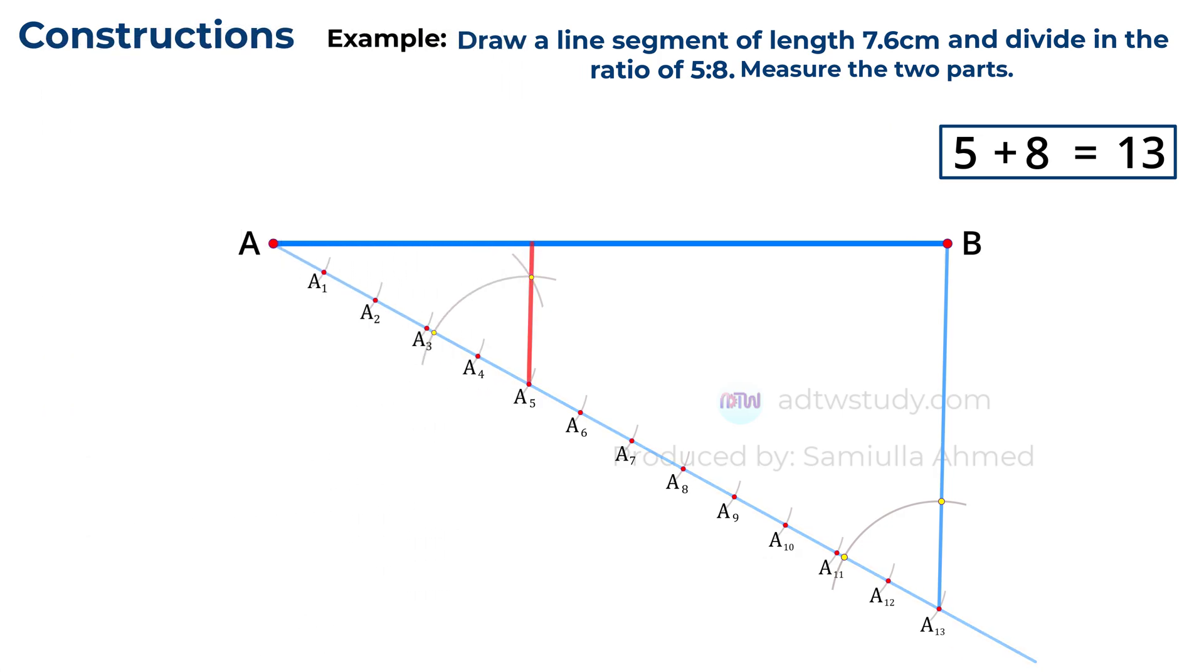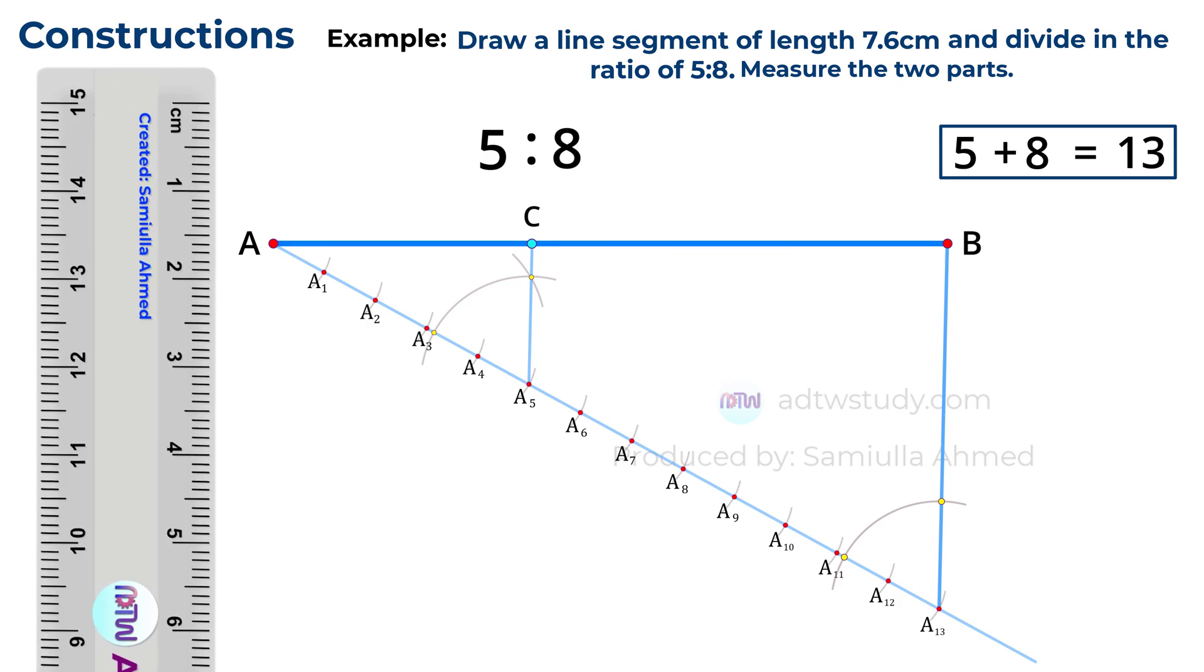Now we have the required parallel line to line A13B. The point where this parallel line intersects line AB will divide the line into a ratio of 5 to 8. The length of one part will be 5 units and the length of the other part will be 8 units. Now take a ruler and measure the lengths of the two parts as shown.